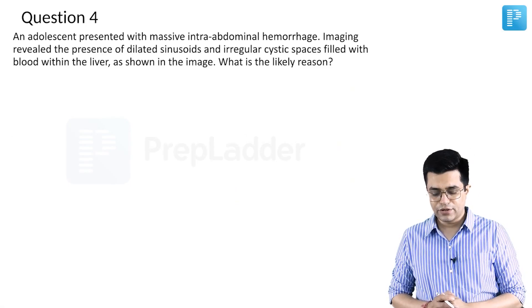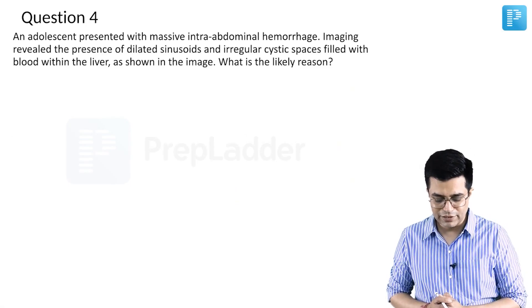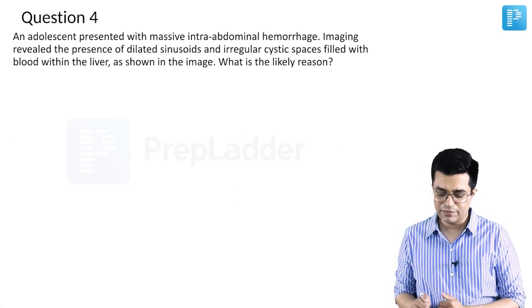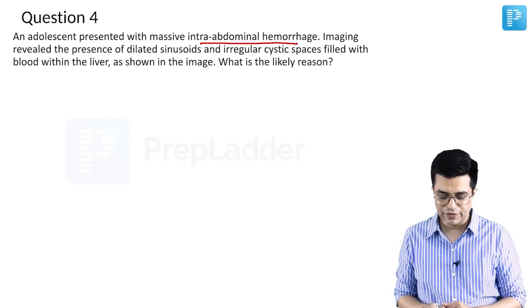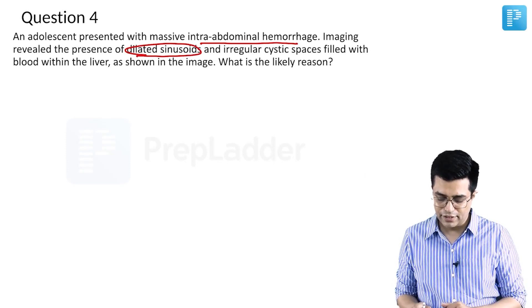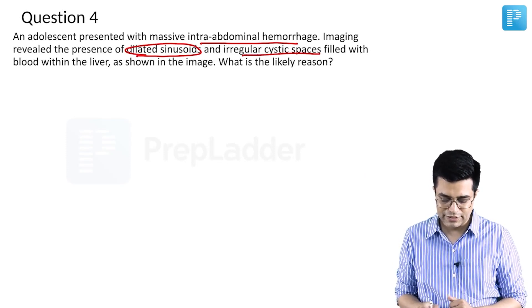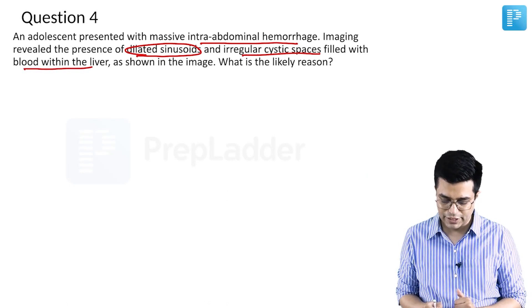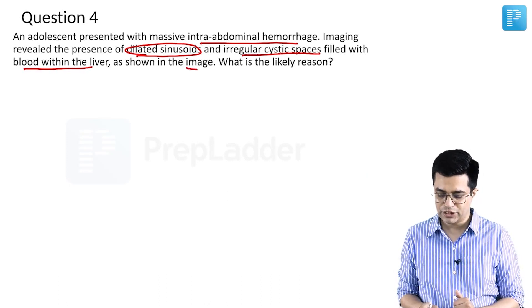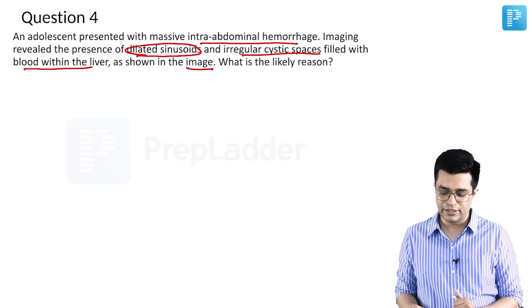Question number 4. An adolescent presented with massive intra-abdominal hemorrhage. Imaging revealed the presence of dilated sinusoids and irregular cystic spaces filled with blood within the liver, as shown in the image. What is the likely reason?